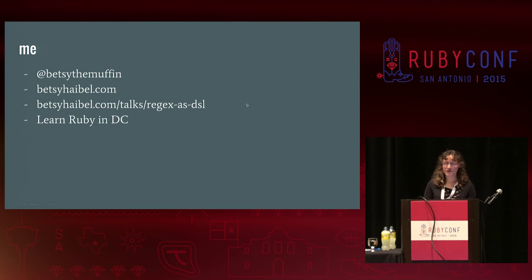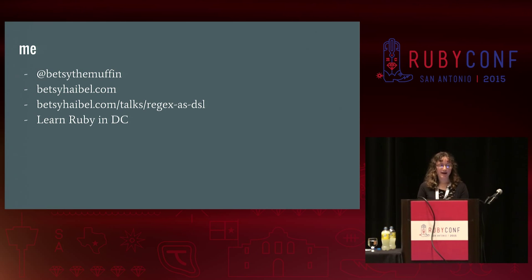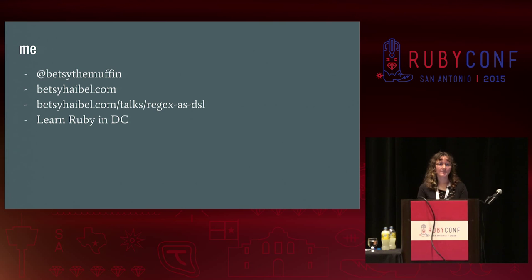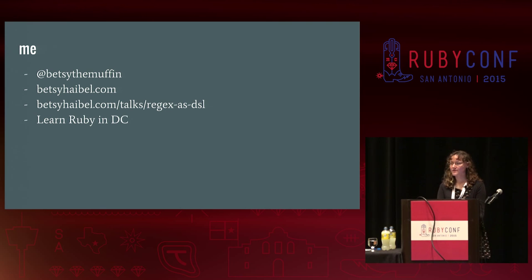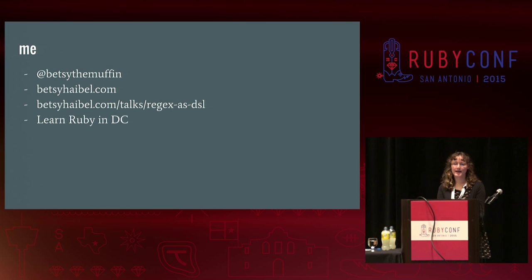I'm very sorry about the AV issues. This talk is going to be up on my website at the URL on the screen shortly after this talk — probably sometime during the lightning talks or dinner, whenever I can get a decent lock onto GitHub with the conference internet. I tweet about books, code, my cat, and feminism at Betsy the Muffin. I also co-organize a meetup back home called Learn Ruby in DC, which is an informal space for newbies to ask questions and find mentorship. If you're interested in making a meetup like that in your own hometown or want to talk shop, please talk to me.